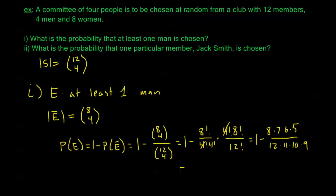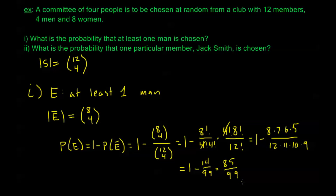This simplifies down to one minus fourteen over ninety-nine, or in other words, eighty-five over ninety-nine. So even though there are twice as many women as there are men, the probability that the committee will have at least one man is still eighty-five out of ninety-nine. That's pretty good.